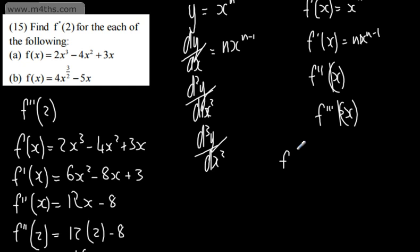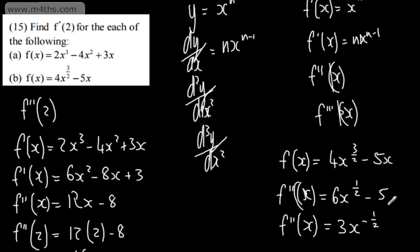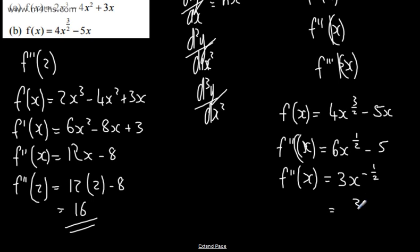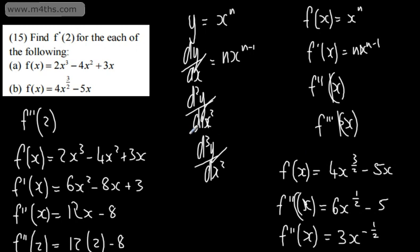For the next one, f(x) = 4x^(3/2) - 5x. The first derivative f'(x) = 6x^(1/2) - 5. The second derivative f''(x) = 3x^(-1/2), which we can write as 3/√x. Evaluating at x = 2: f''(2) = 3/√2, which rationalises to 3√2/2.